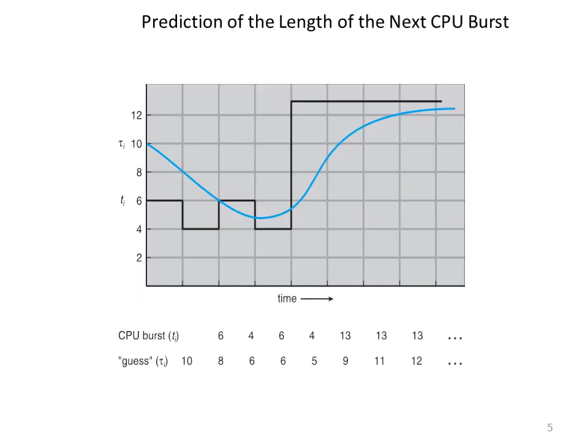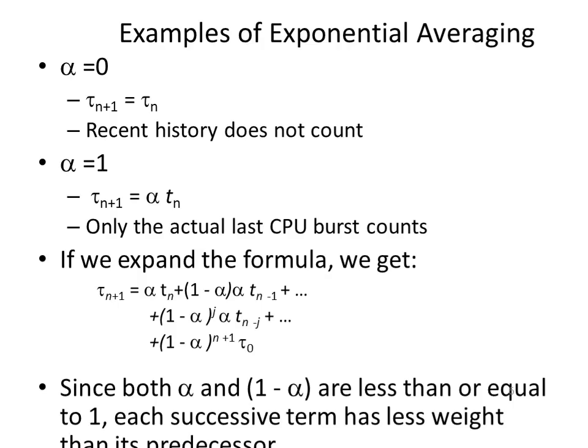This figure shows exponential averaging with alpha equal to half and t-naught equal to 10. When alpha equals 0, tau n plus 1 equals tau n, which means recent history does not count. When alpha equals 1, tau n plus 1 equals alpha times tn, so only the actual last CPU burst cycle counts. If we expand the formula, since both alpha and 1 minus alpha are less than or equal to 1, each successive term has less weight than its predecessor.